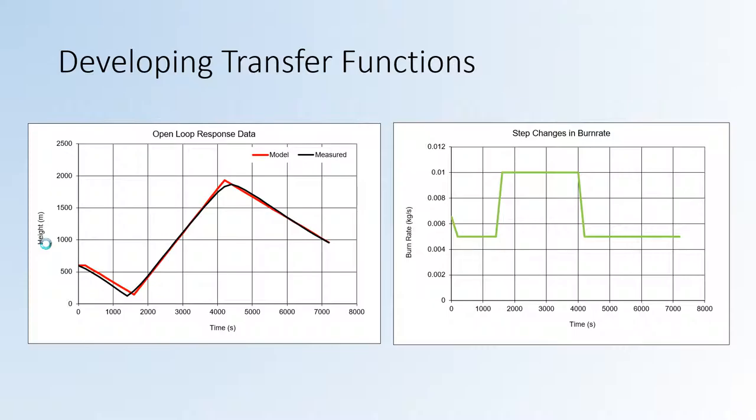We used an integrator model there. Then for the descending of the balloon, or how the balloon goes down in height, we also controlled it with the parachute valve, which we did research on to develop a transfer function based on experimental data. That's how we developed the transfer functions for both the burn rate and the parachute valve.